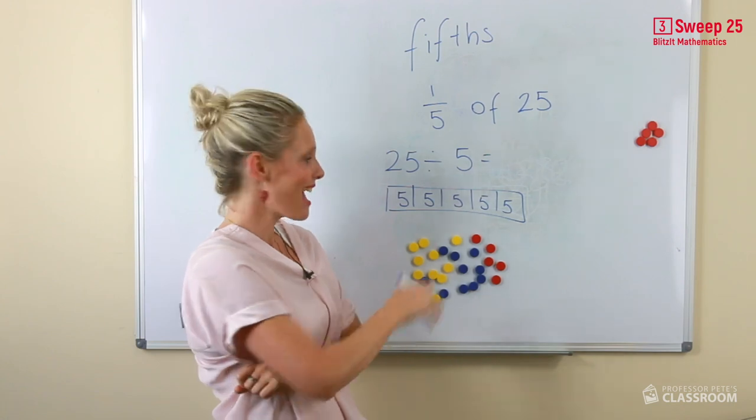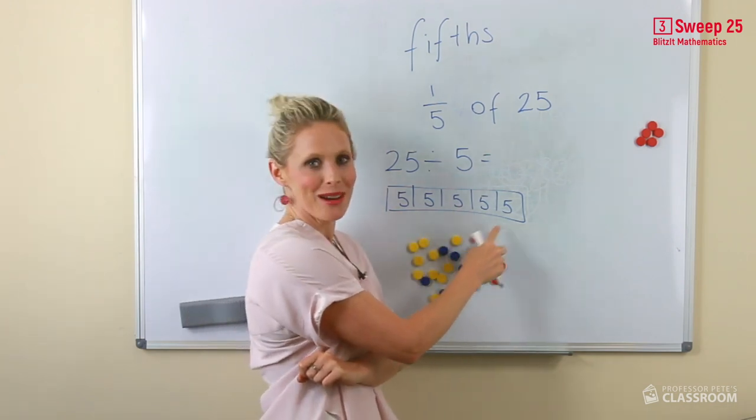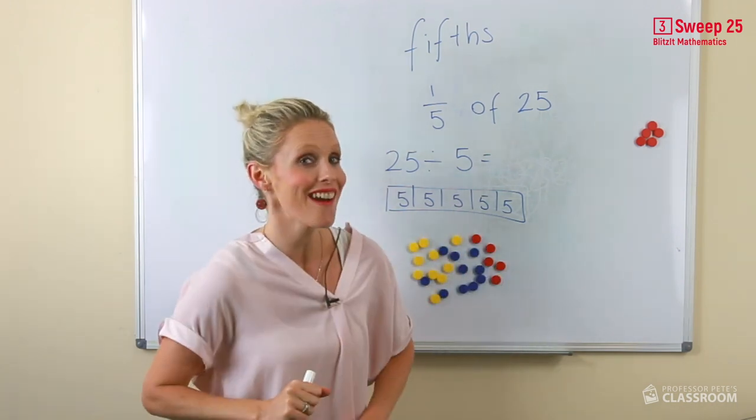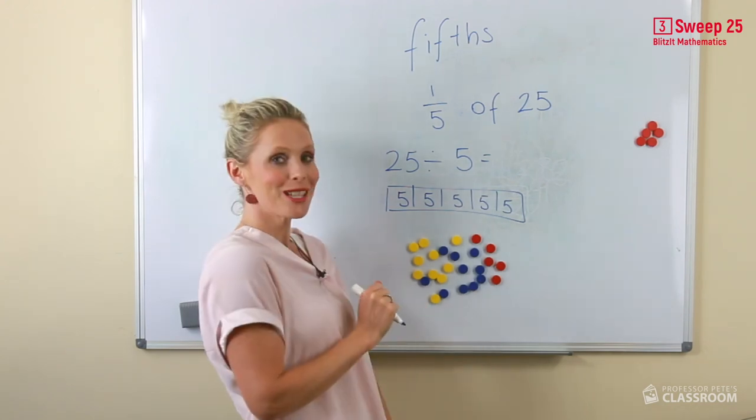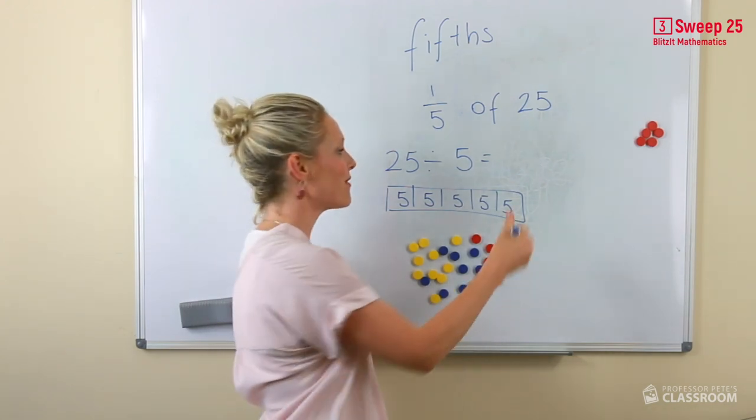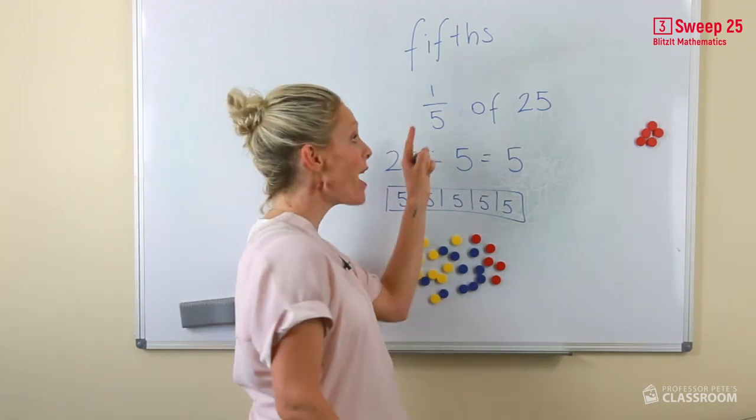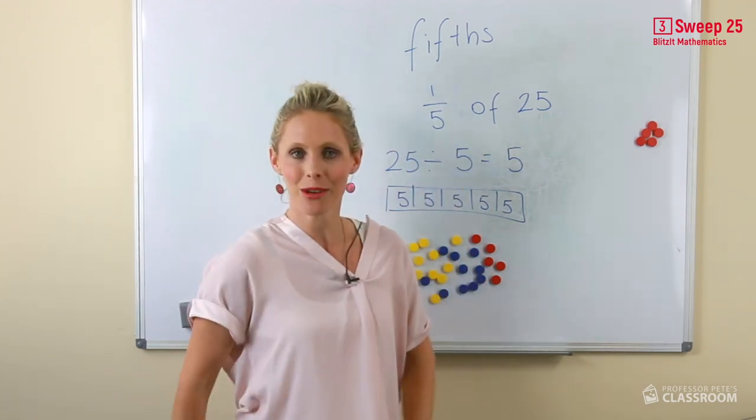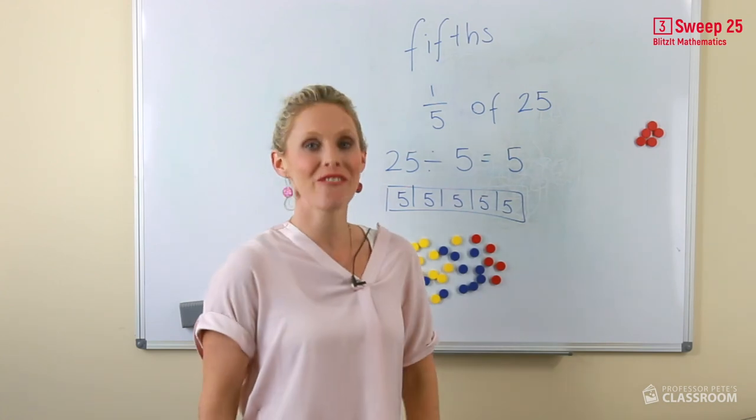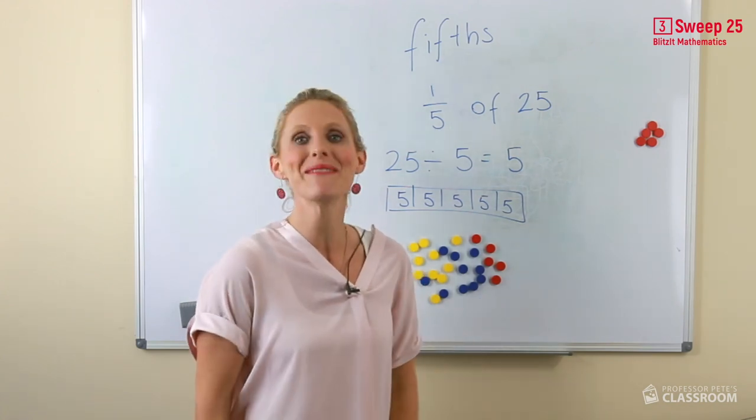Are you ready? 5, 10, 15, 20, 25. We've checked our answer. The answer is 25 divided by 5 equals 5. So one-fifth of 25 equals 5. Amazing!